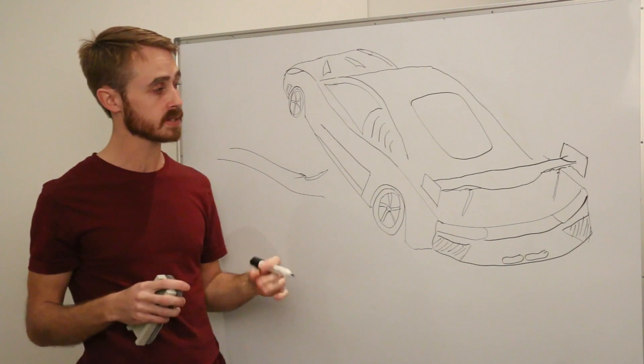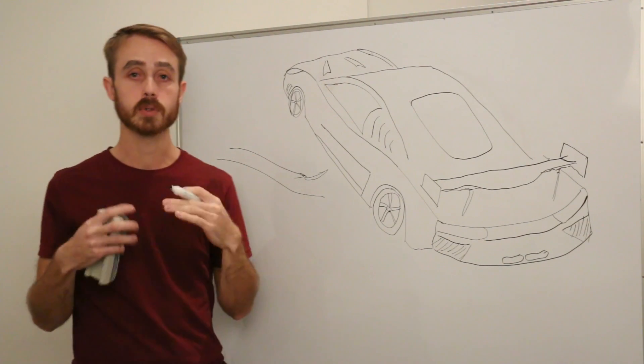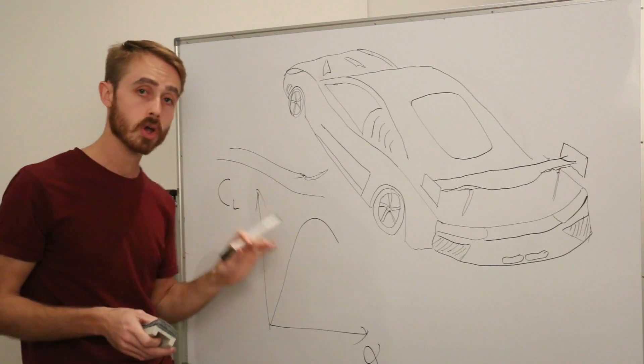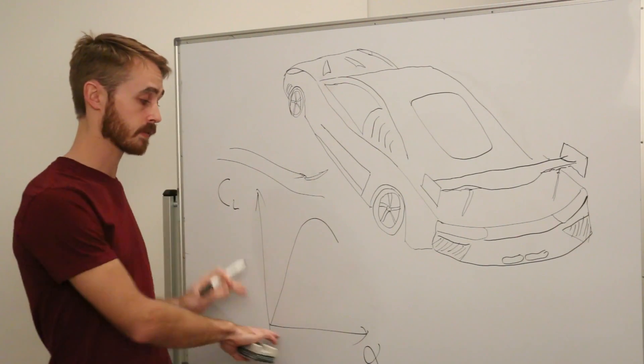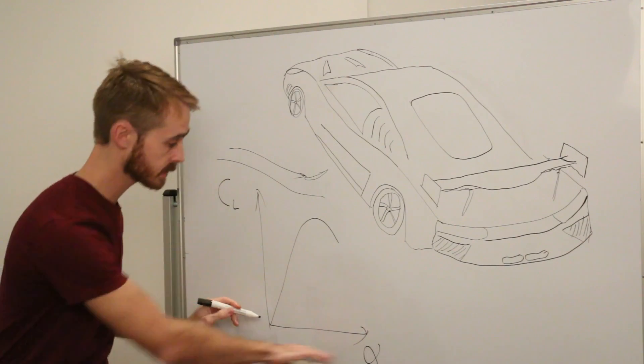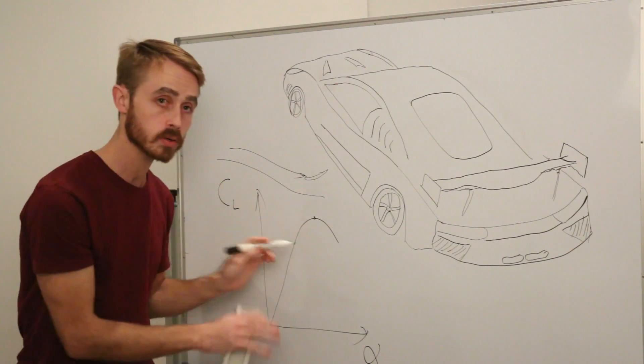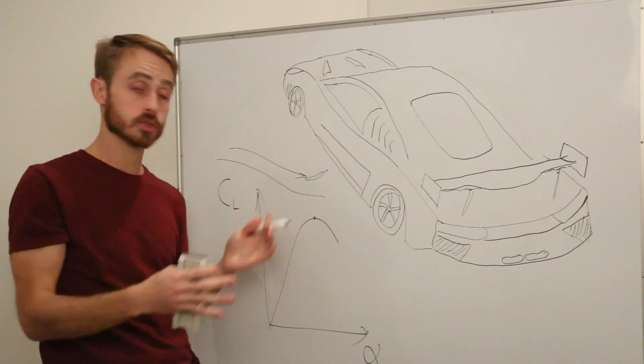Now the ramification of this is that a wing produces lift dependent on its angle of attack. If we look at the coefficient of lift versus the angle of attack for a regular sort of wing, we can see that as the angle of attack goes up the lift increases. Once it reaches a certain critical point the wing will stall.